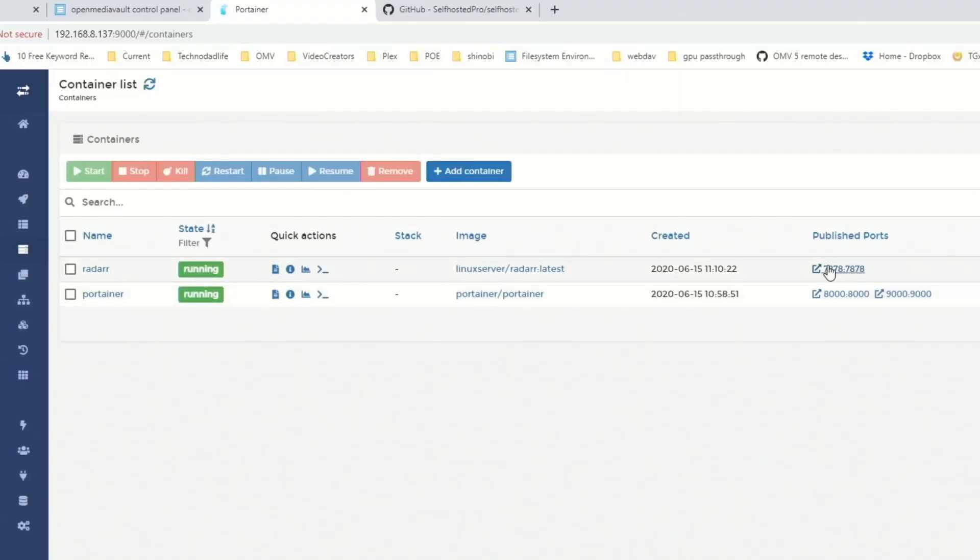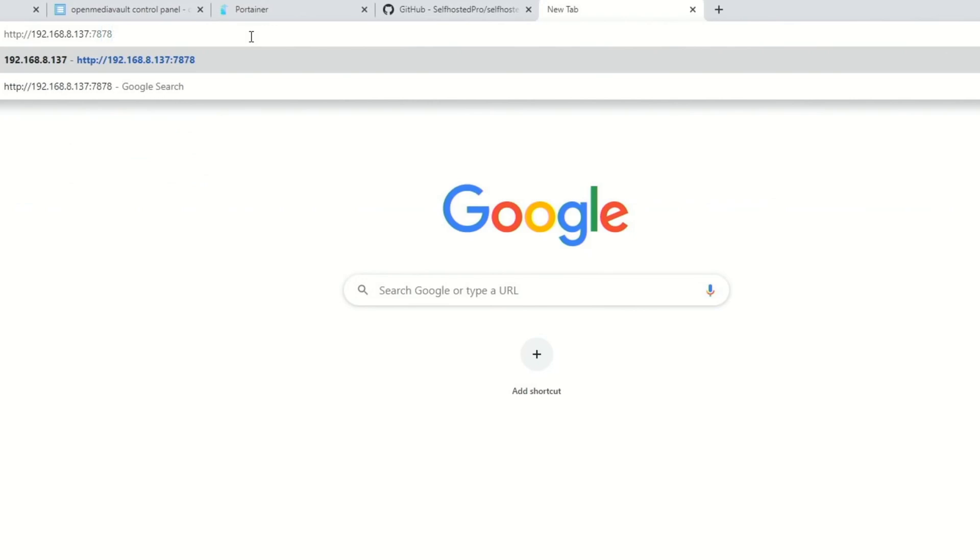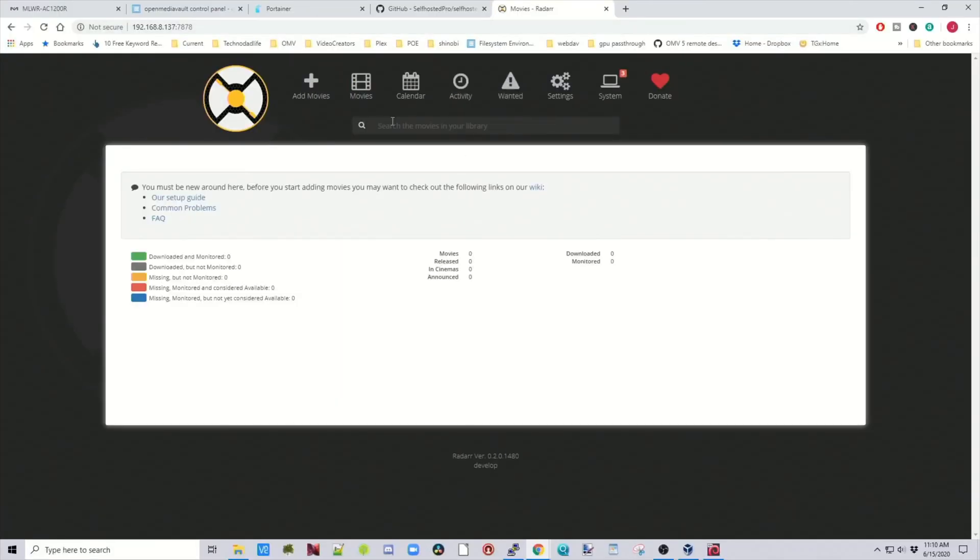Once that's done, you can see this is on port 7878. So we'll copy our IP address. Paste that in, backspace, colon, 7878. Hit Enter. And our Radar is up and running.